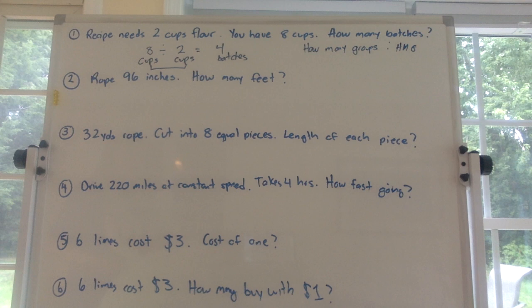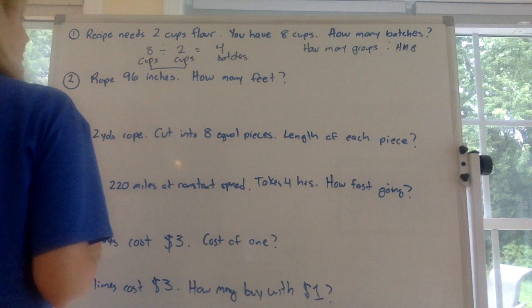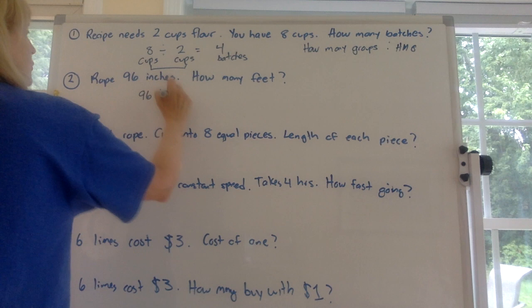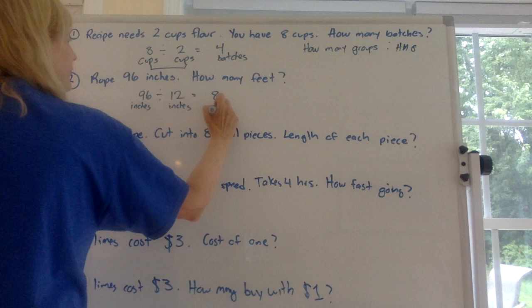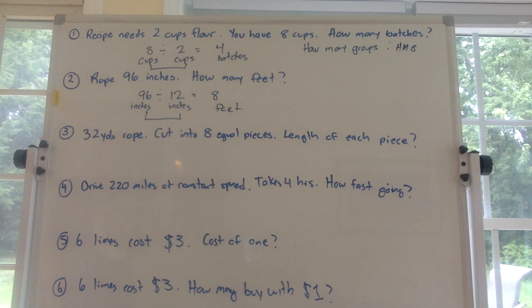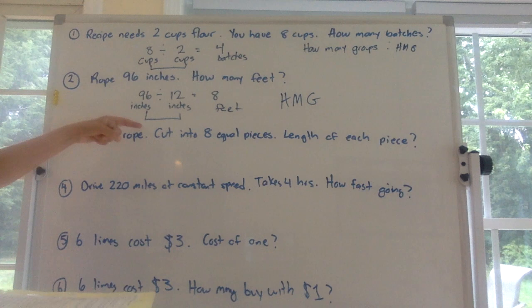Number 2: there are 96 inches of rope. How many feet is that? You would do 96 divided by 12, which equals 8. Label it: 96 inches divided by 12 inches equals 8 feet. These two units are the same on the left side of the equal sign in the division problem — that's HMG also. You're trying to figure out how many groups of 12 are in 96.